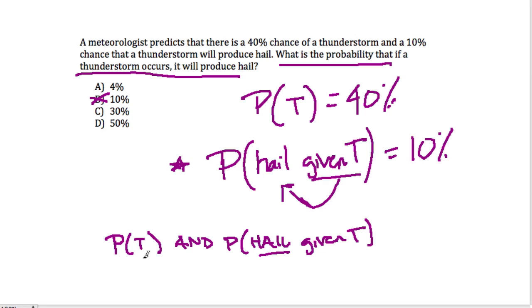These two independent events, because the hail given the thunderstorm, because I guess we're saying it's only going to hail if there's a thunderstorm, and the probability of a thunderstorm are independent. So when we find independent events, and that keyword is 'and' right there, we multiply our percents. So we're going to multiply 40% times 10%, and what happens there is we get 4 out of 100, or 4%, which is choice A, and the answer I chose for this problem.